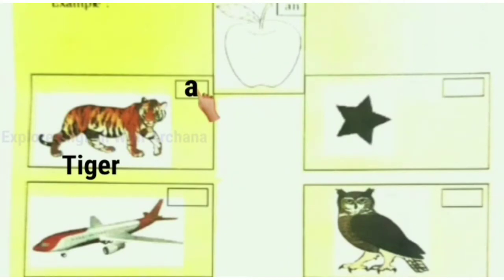Tiger starts with T, which is a consonant, so we write 'a'. Then star - star starts with S, which is also a consonant, so we write 'a'.